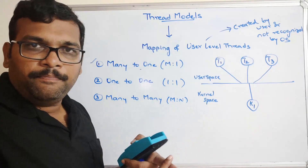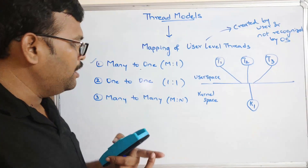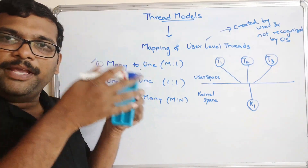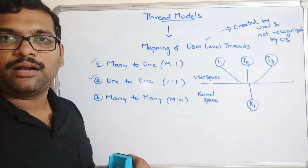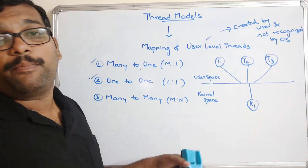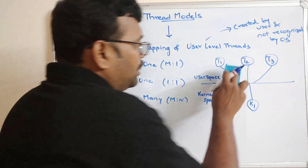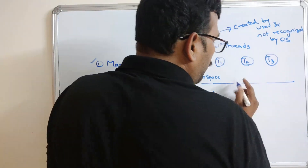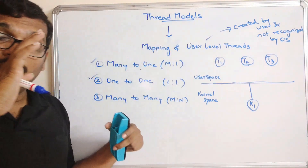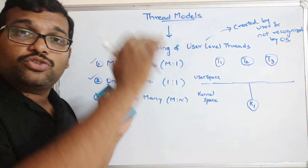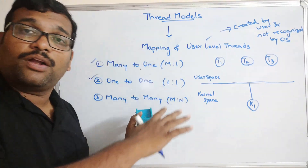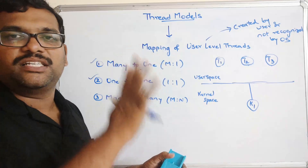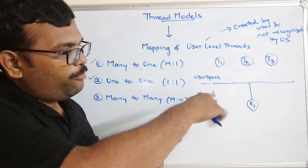In order to overcome this disadvantage, we move on with the one-to-one model. In this model, one thread is associated with one kernel, and we have multiple virtual processors. The disadvantage of many-to-one is clear: if any one thread is in a blocking state, all remaining threads have to wait until it completes execution because all are mapped to the same kernel.